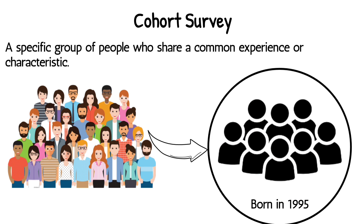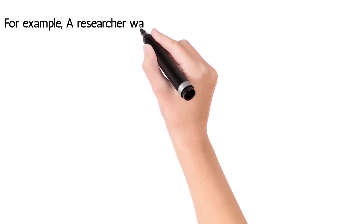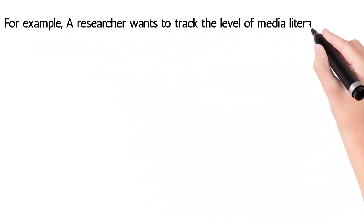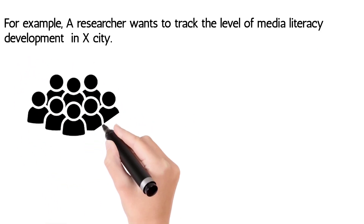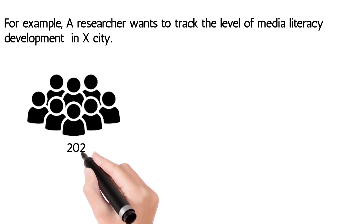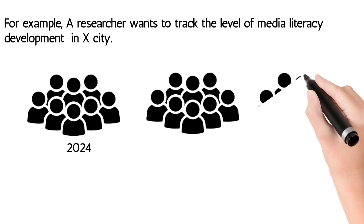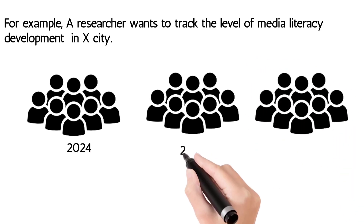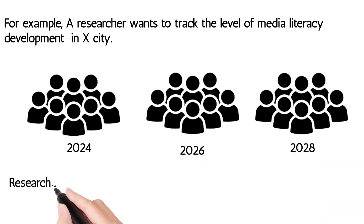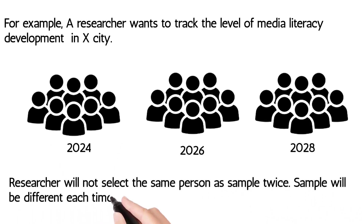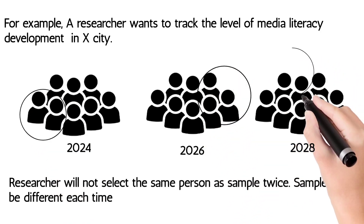Researchers can track this group over time to see how their attitudes change. For example, a researcher wants to track the level of media literacy in X-City. They can conduct a cohort survey where the cohort group will be the people born in the year 2000. The researcher will select samples from the cohort and collect data in 2024, 2026, and 2028. But the catch is the researcher will not select the same person as a sample twice — different samples will be taken at different times.